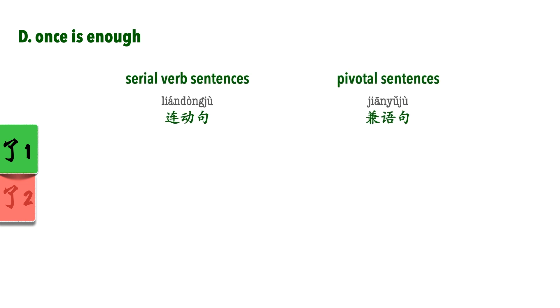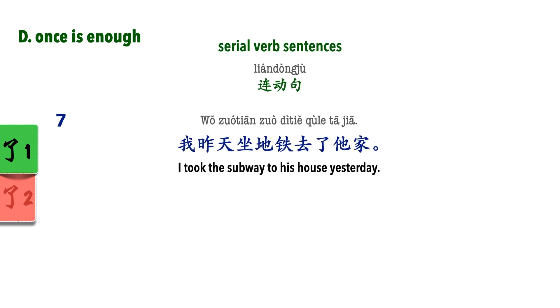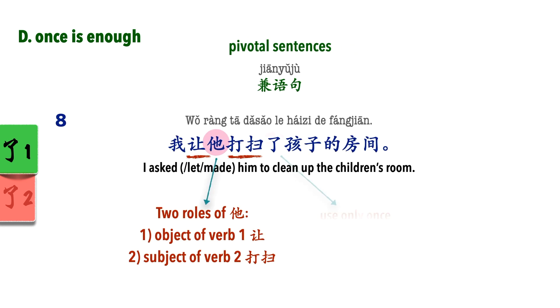Once is enough. Typically, in serial verb phrases and pivotal sentences, in which more than one verb is present, we only use 勒1 with the last verb. Let's look at these examples: 我昨天坐地铁去了他家. 我让他打扫了孩子的房间.